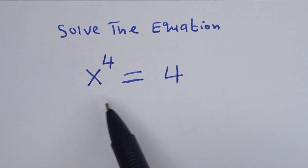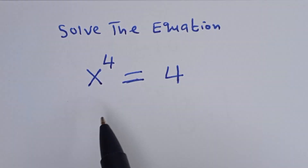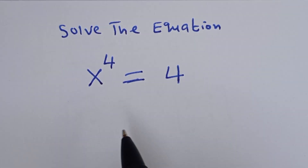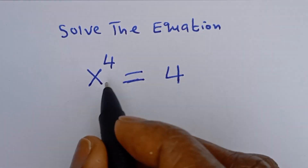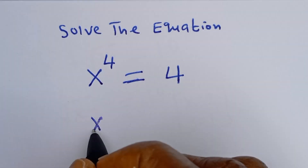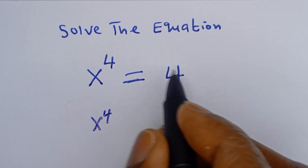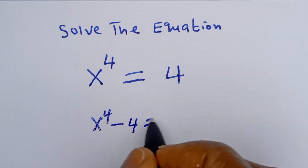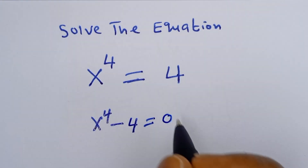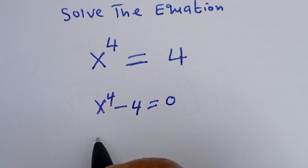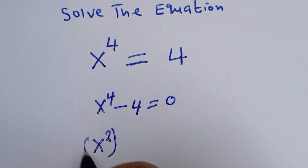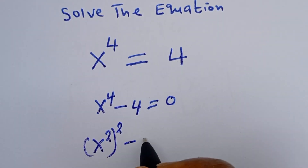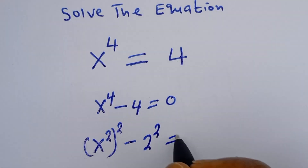Hello. How to solve for s in this equation: s to the power of 4 is equal to 4. From here, we have s to the power of 4. If you bring this 4 to this side, we get s to the power of 4 minus 4 is equal to 0. This can be written as s squared squared minus 2 squared is equal to 0.